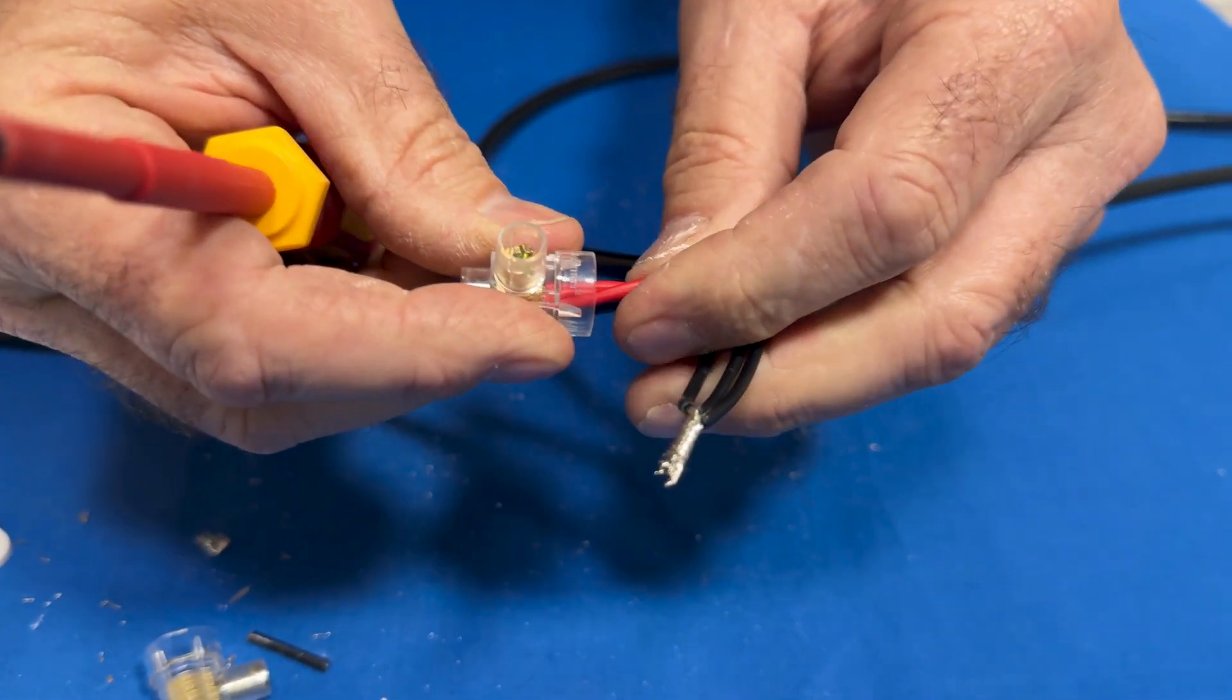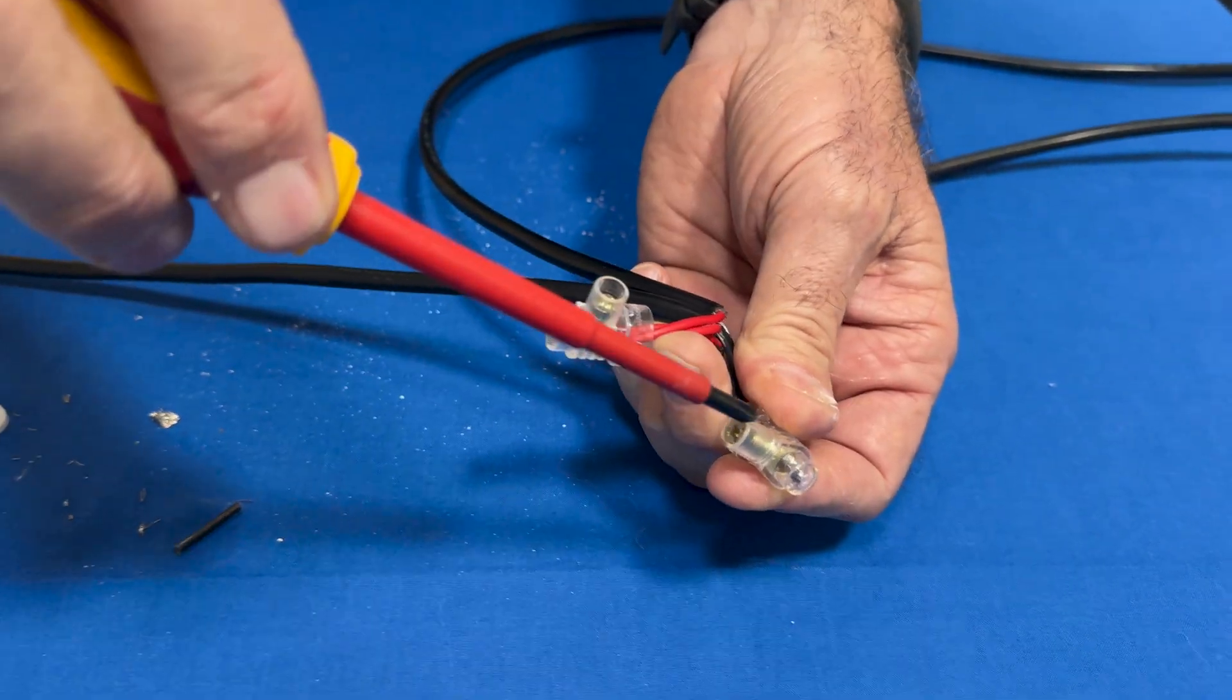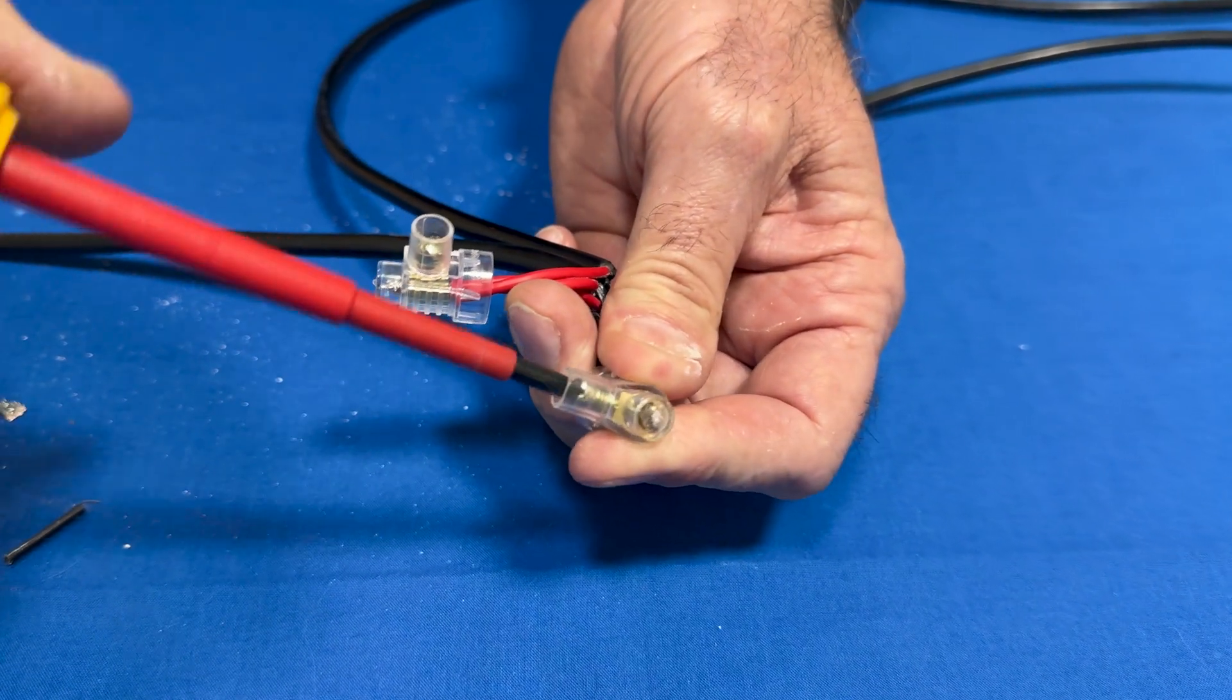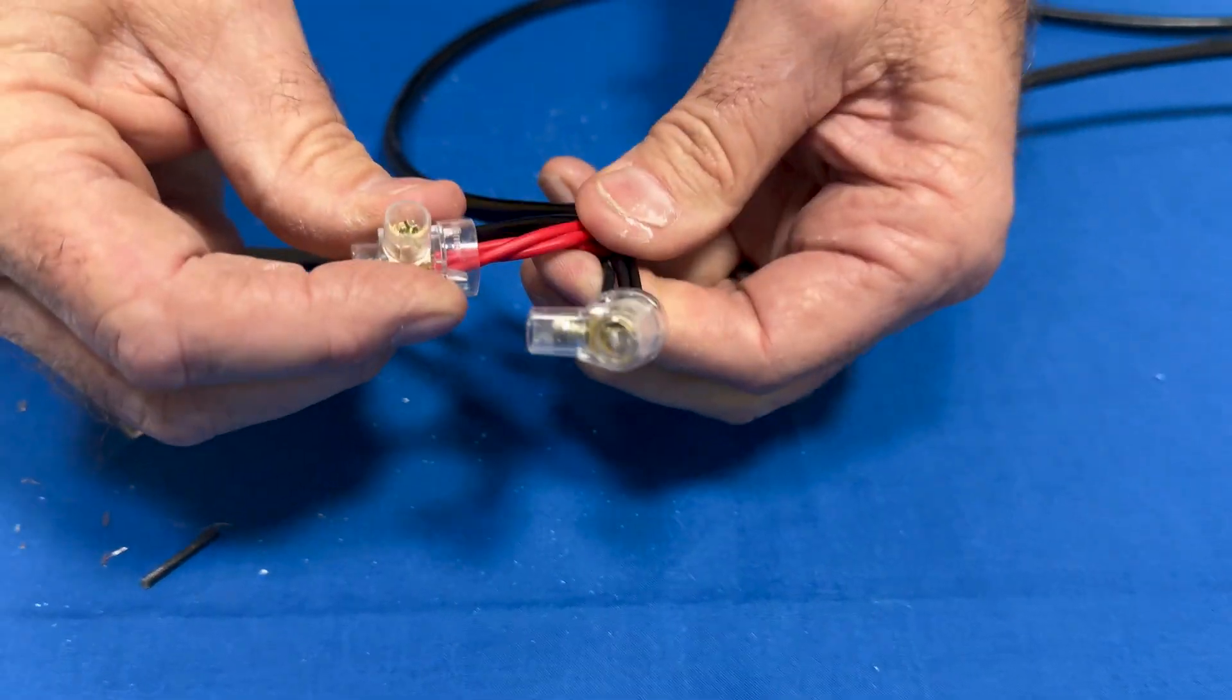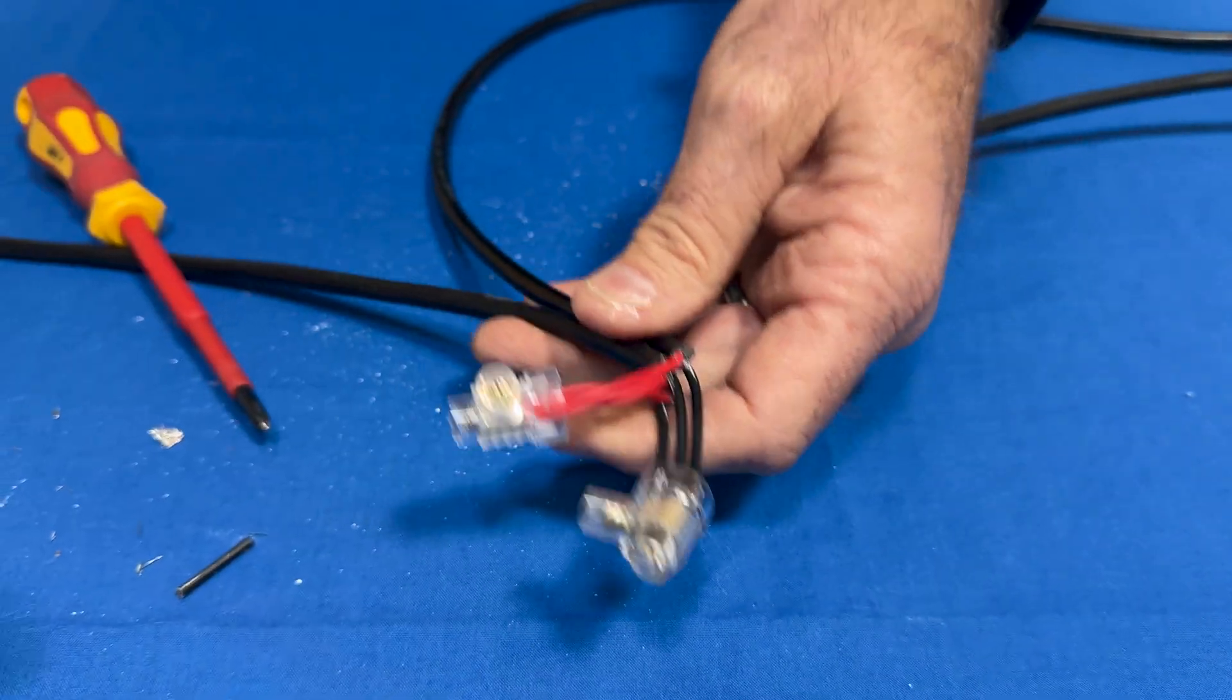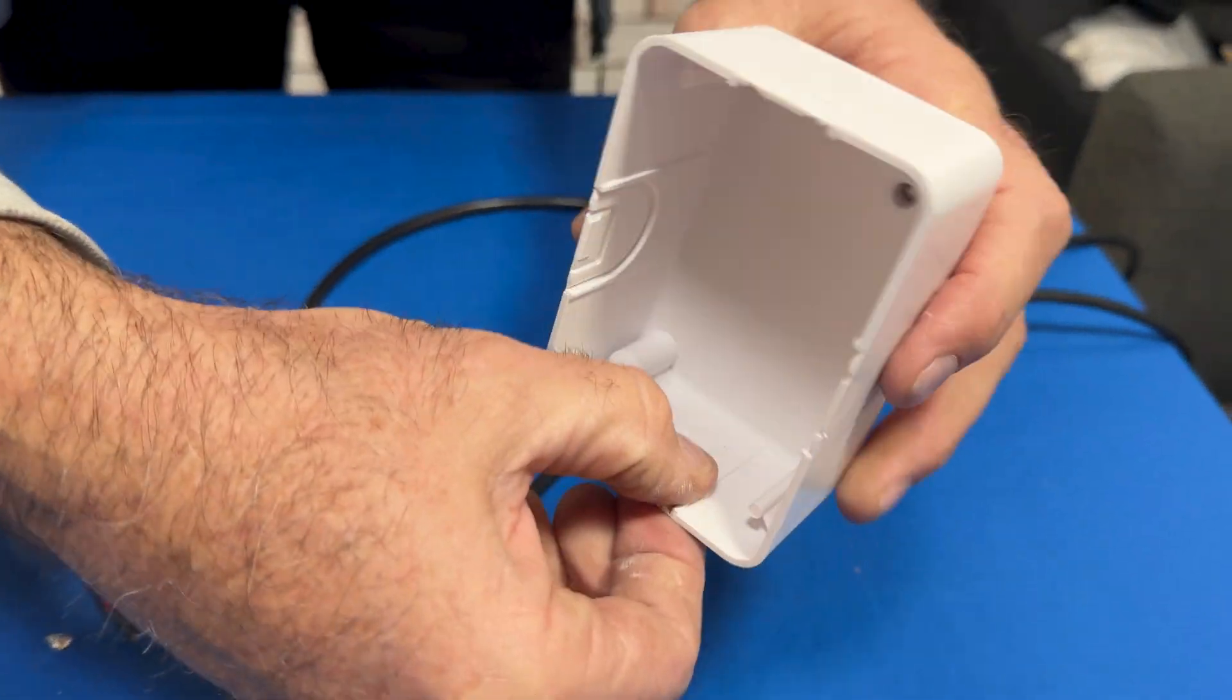And that's it, nice and neat. Then on the other one, screw it nice and tight. Yeah, to put it in the junction box, there are little cutouts there.